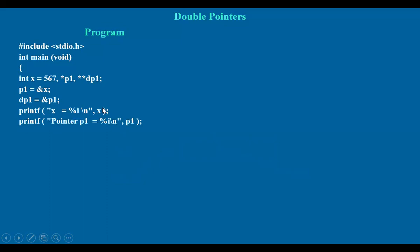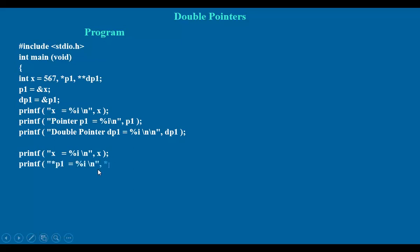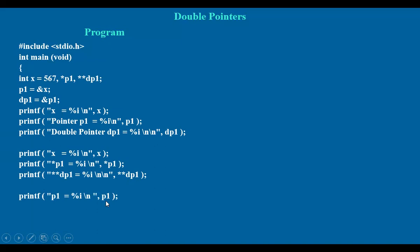Now, let's get these values: x, pointer p1, and double pointer dp1. If you display x and star p1 — star p1 is nothing but the value of the variable itself, same as x. And if you say double star dp1, we will see. Here, p1 and star dp1 — let us see what all these will display.